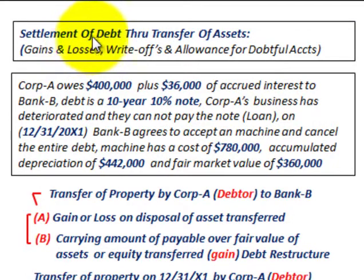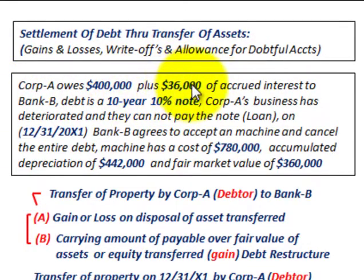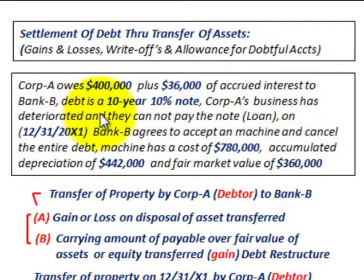What we're going to be looking at here is the settlement of debt through transfer of assets. We're going to be looking at gains and losses, some write-offs, and also allowance for doubtful accounts. For example, Corporation A owes $400,000 plus $36,000 of accrued interest to Bank B, and the debt is based on a 10-year, 10% note. Corporation A's business has deteriorated and they cannot pay this loan.